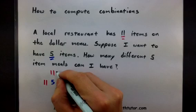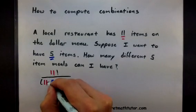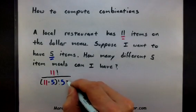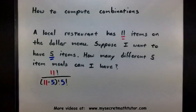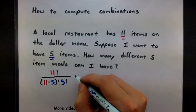So on top we have 11 factorial divided by 11 minus 5 factorial multiplied by 5 factorial. Now you could actually take 11 factorial, figure what that out, and also do the same for on the bottom, but I really recommend expanding this out and then cancelling out common terms.